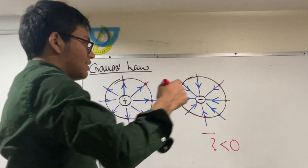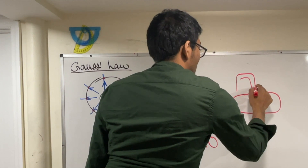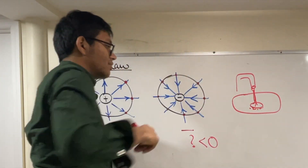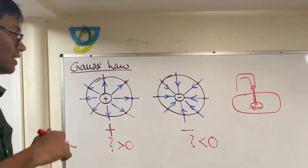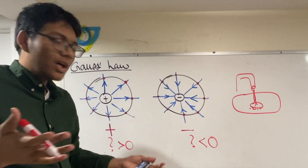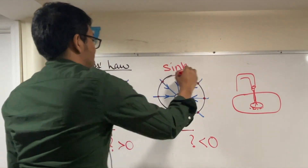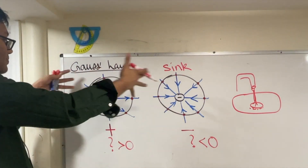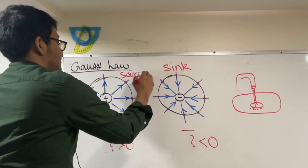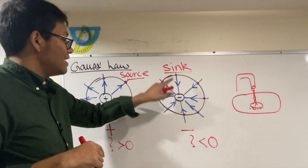Gauss thinks: this looks a lot like when you turn on your faucet — all the water drains in the sink. Don't these electric field lines look a lot like water? Aren't they draining inside of this negative charge? So let me call this a sink. And here, all the electric field lines look like they're being sprouted out of this positive charge — let me call that a faucet, in other words, a source. So this is called a source when you have a positive charge and a sink when you have a negative charge.